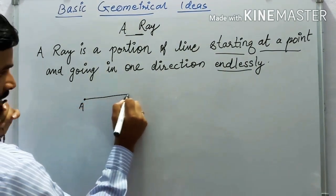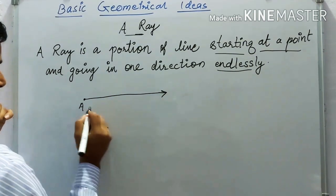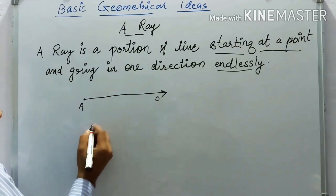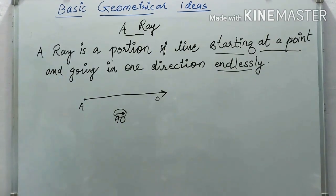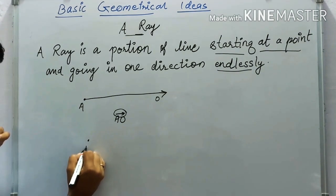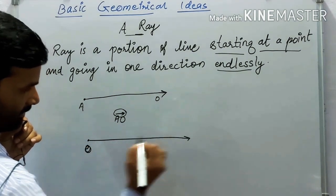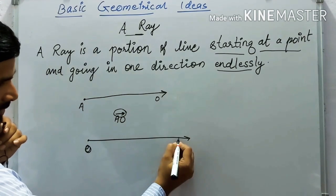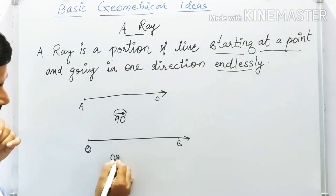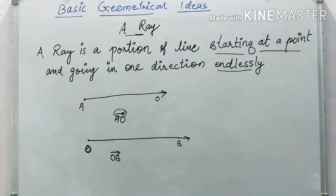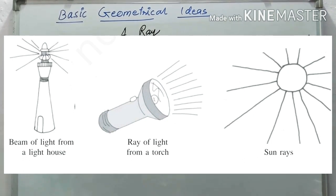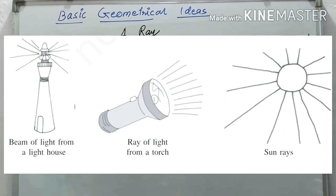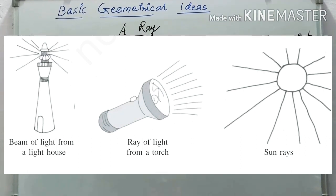For a ray, point O is the starting point and it extends in one direction — this is shown by the ray symbol over OA. Similarly, OB is also a ray starting from O going toward B. Three examples are: beams of light from a lighthouse, rays of light from a torch, and the rays of the sun.